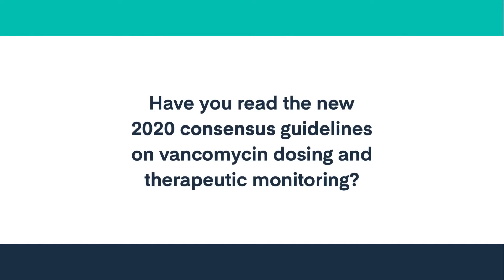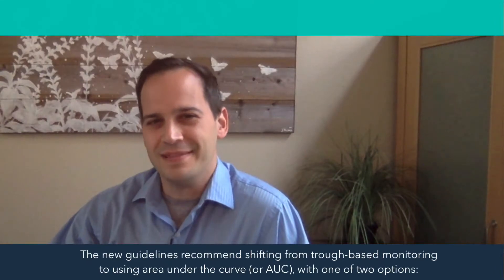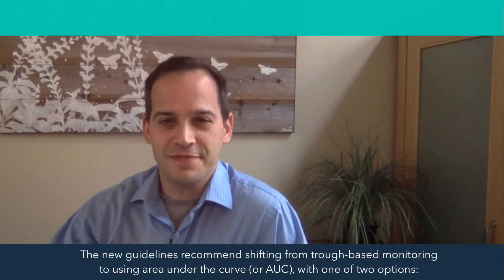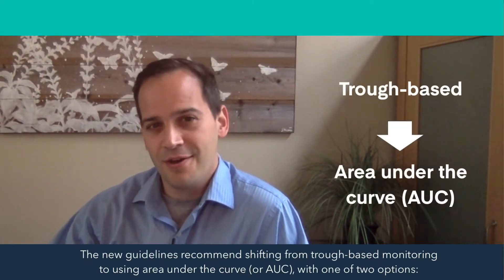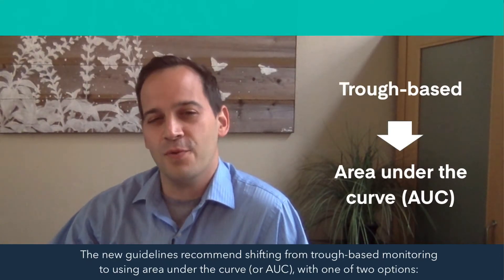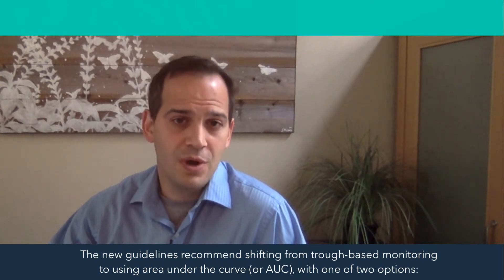Have you read the new 2020 consensus guidelines on vancomycin dosing and therapeutic monitoring? Has your hospital or health system begun implementing the new vancomycin AUC dosing approach yet? The new guidelines recommend shifting from trough-based monitoring to using area under the curve, or AUC, with one of two options.